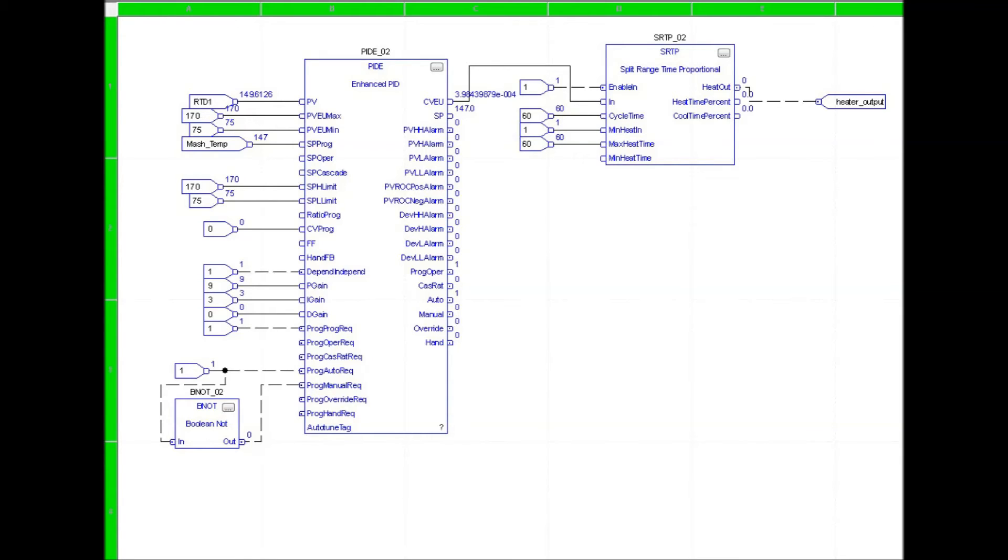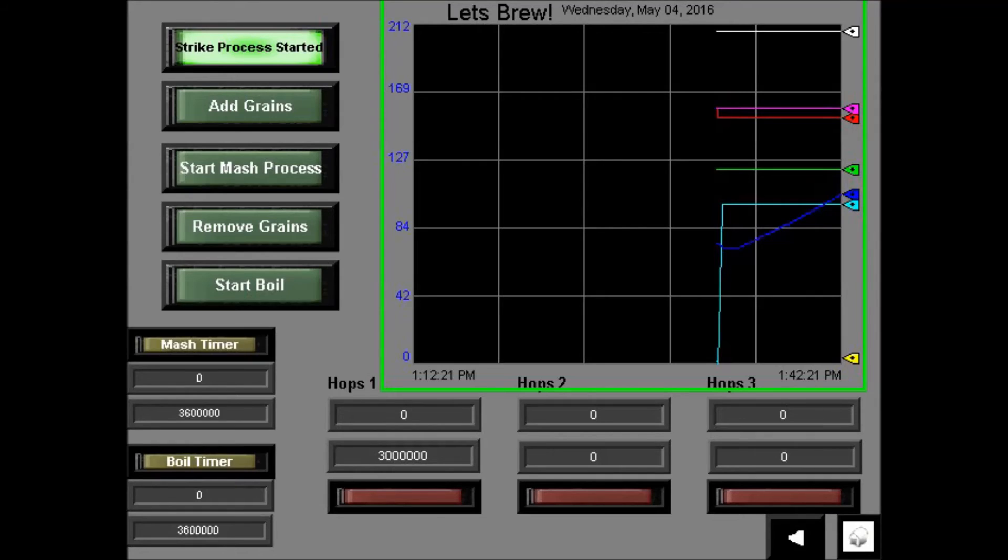Once the strike temperature has been reached, and only then, can the user select add grains. This cuts power to the heater and to the pump.